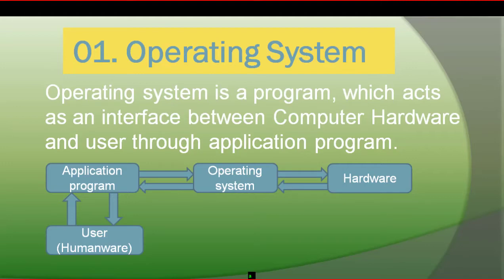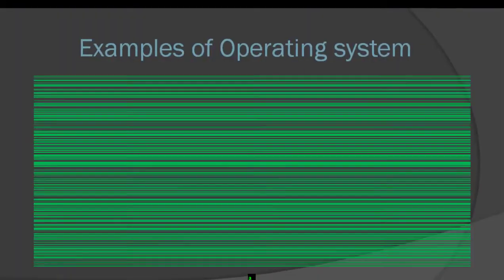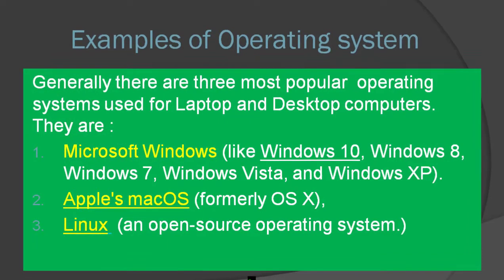The operating system manages hardware. For example, a printer uses printer driver software so that when a print command is sent, the printer is ready to print. The operating system coordinates these operations.